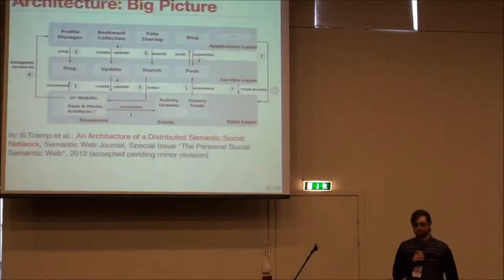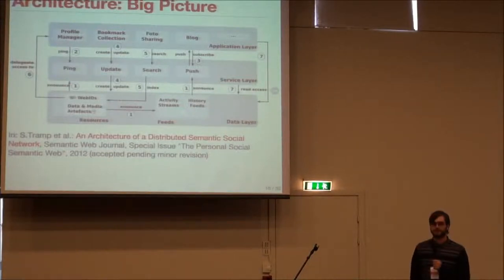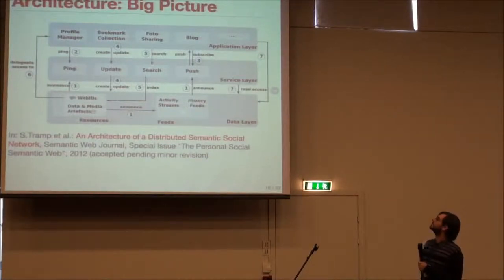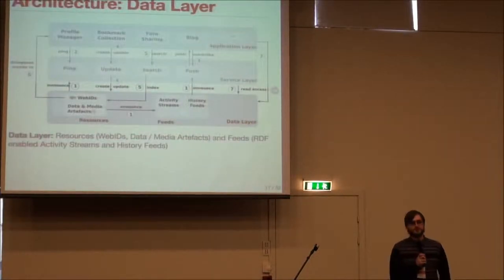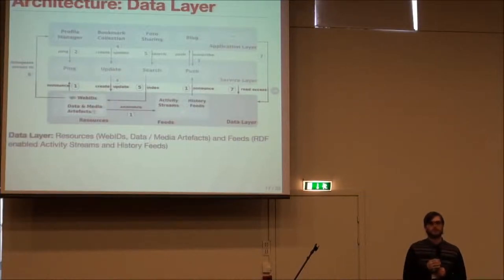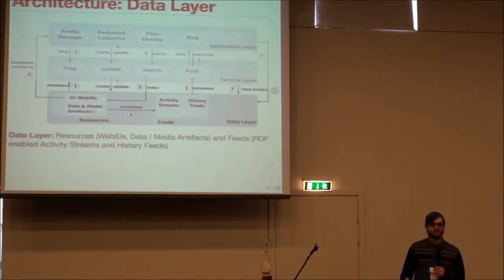Now let's take a look at the technological overview of the architecture. There are four layers in the architecture of the distributed semantic social network. The first layer is the data layer, the second is the protocol layer represented by the arrows, the third is the service layer, and the last is the application layer. The data layer basically represents all the data owned by users — web IDs of people, everything they post online like videos, pictures, links to websites, and any other resource.